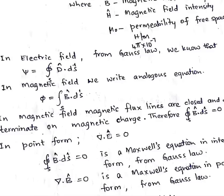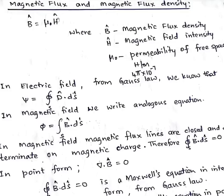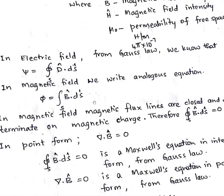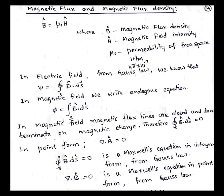The surface integral of B dot dS = 0 is Maxwell's equation in integral form from Gauss's law. And del dot B = 0 is Maxwell's equation in point form from Gauss's law. Please note these two equations as they are very important. This concludes the topic of magnetic flux and magnetic flux density, where we compared it with electric flux.